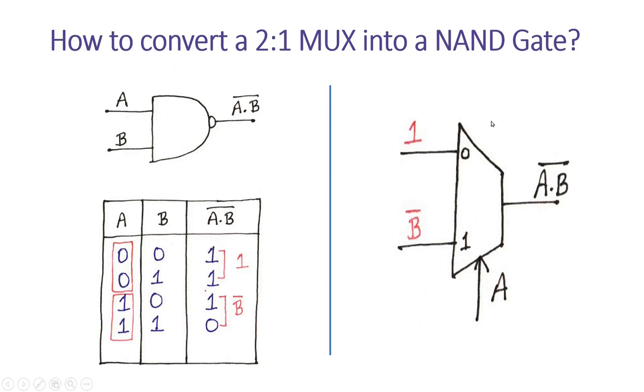This is how we can implement a NAND gate with the help of a 2:1 multiplexer.